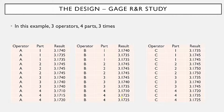Basically the design is a gauge R&R study. In this example we're going to have three operators. They're going to measure four parts three times each. So here's the data — operator A measures part one three times, part two three times, etc.